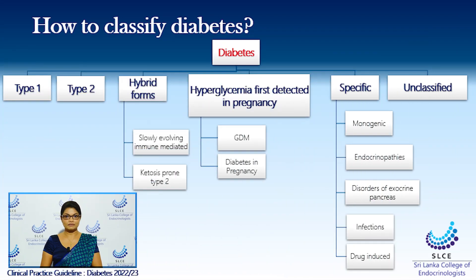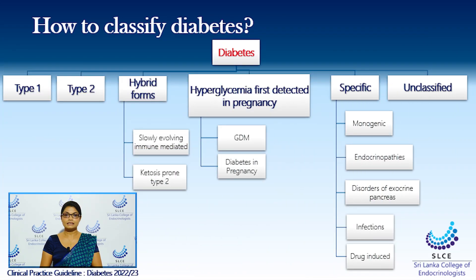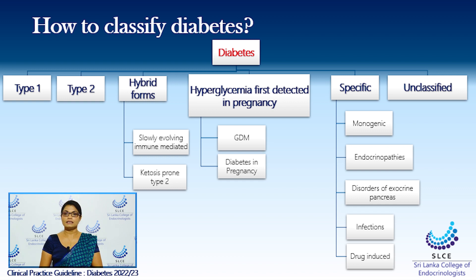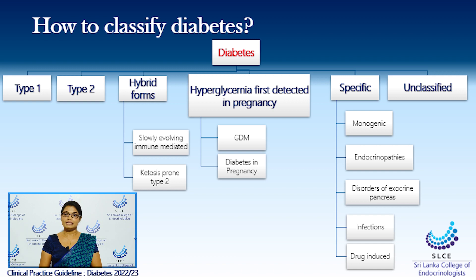If you look at the classification of diabetes, type 1 diabetes, which has a low prevalence, is commonly seen in children. It has an autoimmune pathophysiology. Type 2 diabetes, however, is much more common and is seen in about 90 to 95%. It is seen commonly in adults, however it is much more commonly seen now in children and in adolescents.